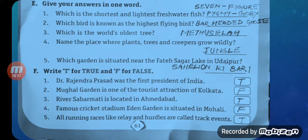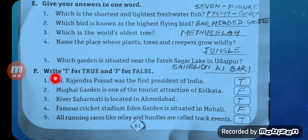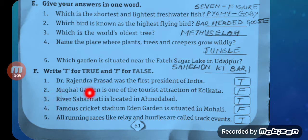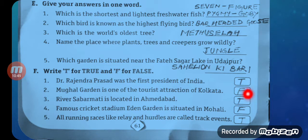Now, Write T for True and F for False. Number one: Dr. Rajendra Prasad was the first president of India? True — T. Number two: Mughal Garden is one of the tourist attractions of Kolkata? False — F. The Mughal Garden is in Delhi. Number three: River Sabarmati is located in Ahmedabad? True — T.